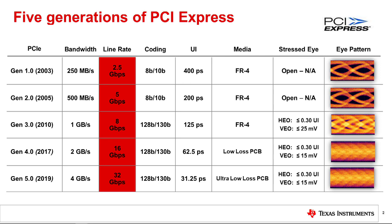The retimer is a relatively complex function fully embedded into the system protocol. On the other hand, a linear repeater lacks any protocol awareness. It simply uses analog equalization techniques to expand the eye opening and make the overall channel to the PCIe receiver appear to have a lower attenuation.